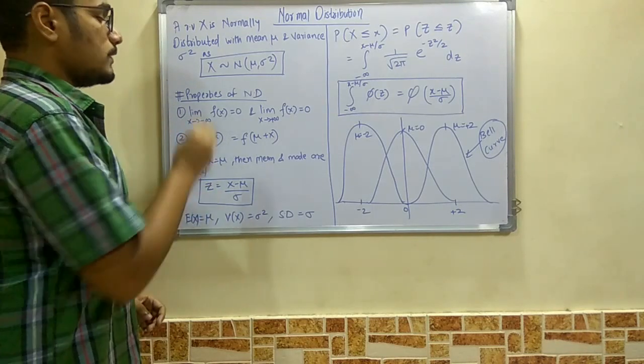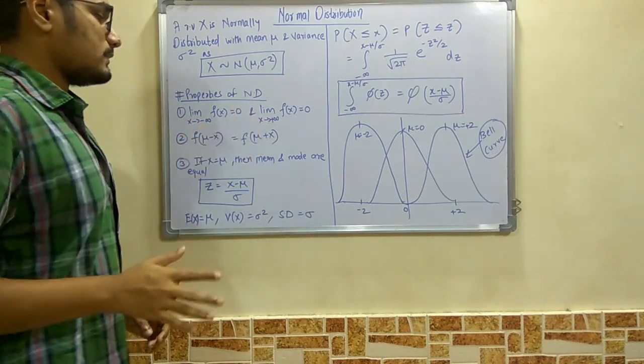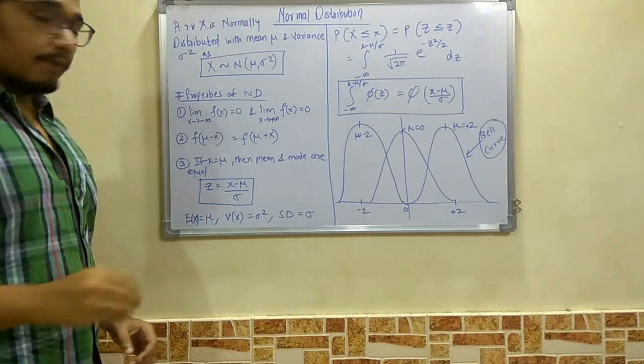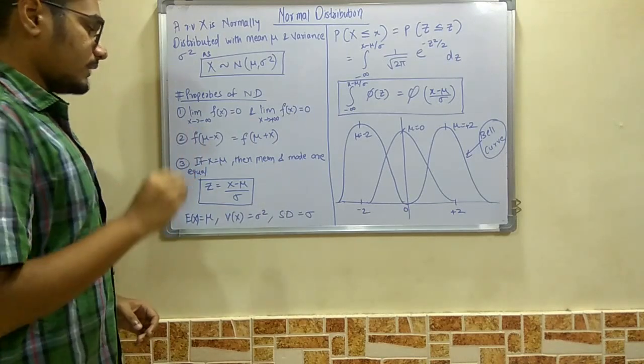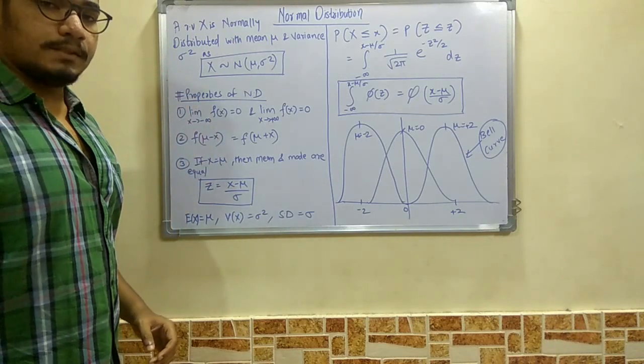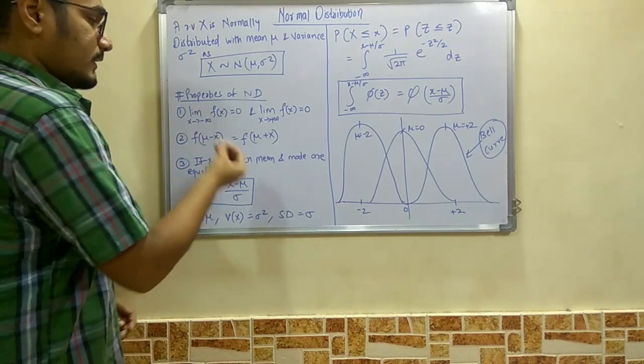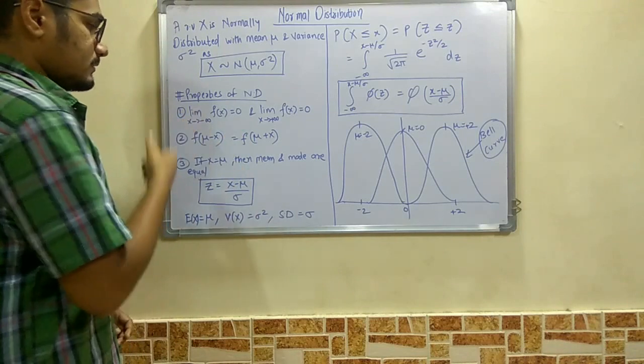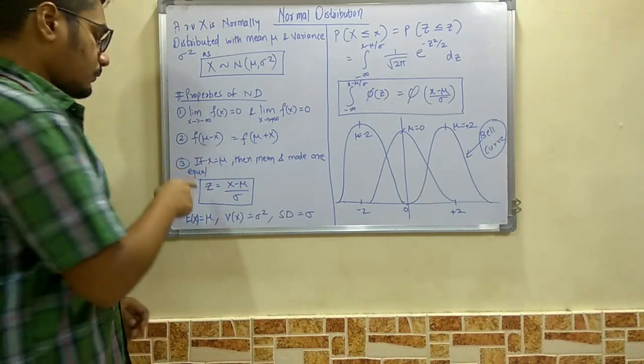Next, we have: if X equals μ, that is if the mean equals the probability that we're going to find, then the mean and mode in this case are equal. So we give the equation as Z = (X - μ)/σ.